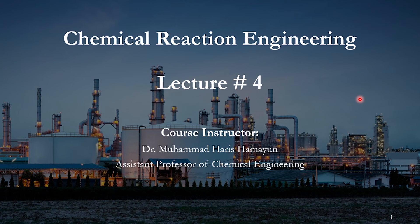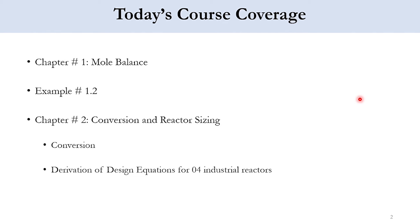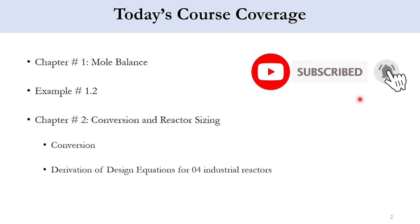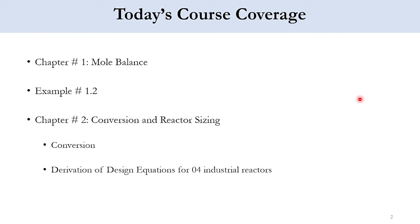Hello everyone, welcome back to the Aspen Tech channel. In our lecture series on the chemical reaction engineering topic, we are bringing lecture number four. In today's course coverage, we will start again from chapter one, solve the last example — Example 1.2 — to wind up chapter one, then move to chapter two: conversion and reactor sizing, where we will derive the design equations for the four industrial reactors.